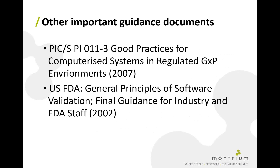Two other documents I recommend are: PICS — the Pharmaceutical Inspectorate Collaboration Scheme — specifically PICS 11.3, 'Good Practices for Computerized Systems in Regulated GXP Environments.' It's about 50 pages and gives a lot of insight into what inspectors expect to see. The other, slightly older, document is the FDA's 'General Principles of Software Validation: Final Guidance for Industry and FDA Staff.' It's very much a GMP-type document, but gives insight into what FDA inspectors are looking for, notably around documented evidence.